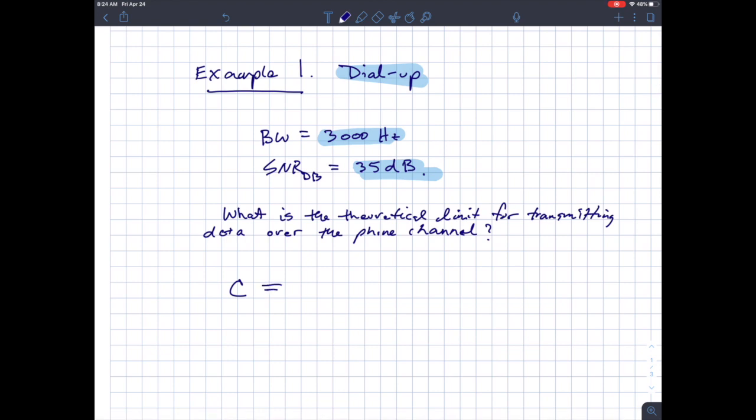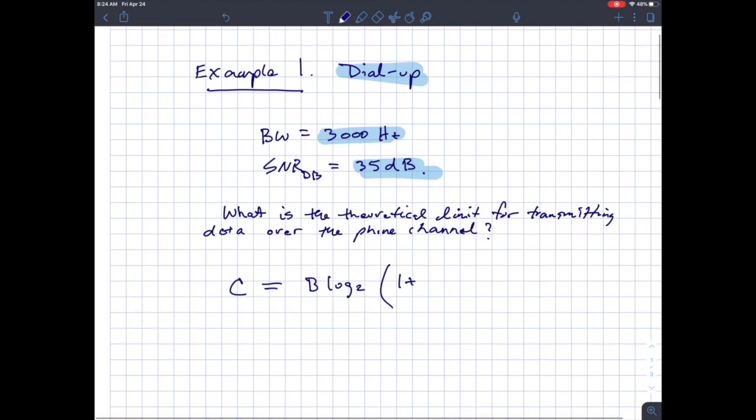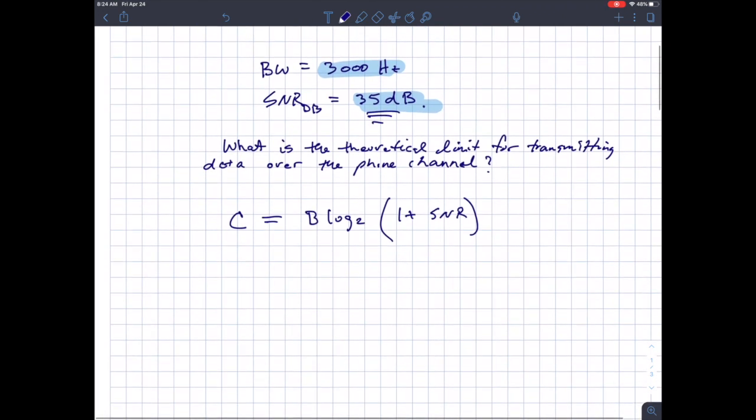What we know is that the channel capacity theorem is the bandwidth, which we know, and log base 2 of 1 plus SNR. So we know what the signal to noise ratio is because it was given. The thing is it was given in dB, so you have to convert that.